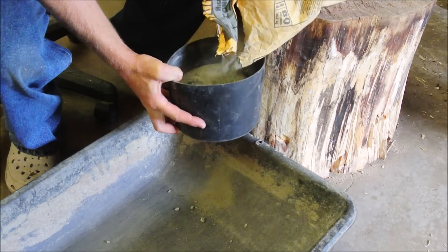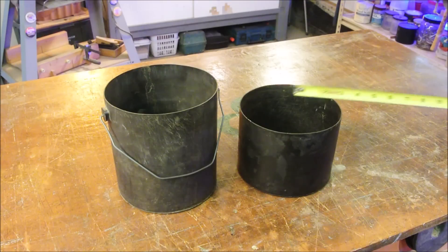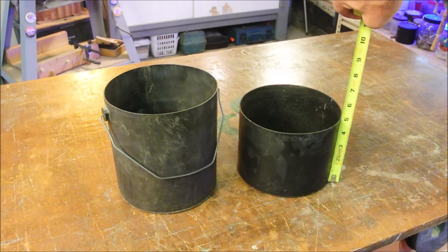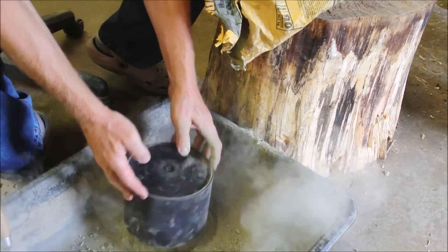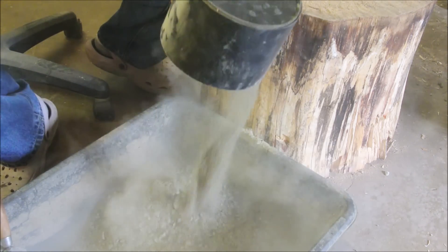Now it's time to measure out some concrete. One 80 pound bag will be plenty to make four of these parts. In my case, I'm using an old plastic paint bucket that's been cut down to 5 inches. Using one of these, I have to fill it up one and a half times with dry concrete.